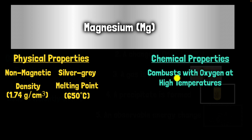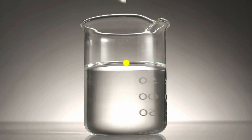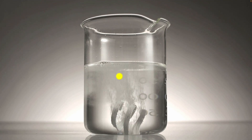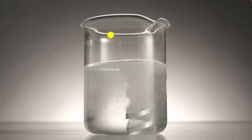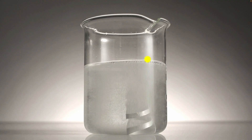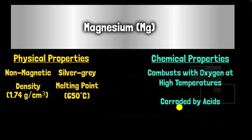Magnesium also has chemical properties. For example, it combusts with oxygen at high temperatures — this is a chemical property because observing it requires a chemical reaction between magnesium and oxygen, creating new substances and losing the original identity. Another chemical property is that it can be corroded by acids. If you put magnesium in acid, you can see it being corroded and bubbles forming — that's actually hydrogen gas being produced. You can test that it is indeed hydrogen, which confirms that putting magnesium in acid is a chemical reaction and a chemical change, because the gas produced is a new substance altogether.